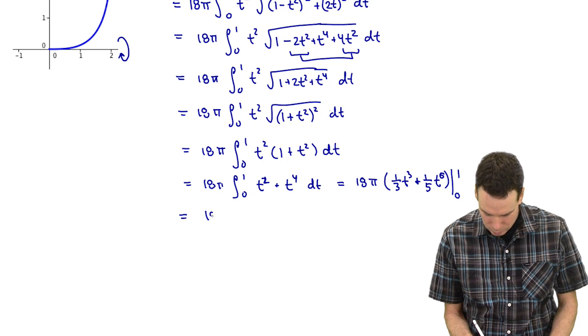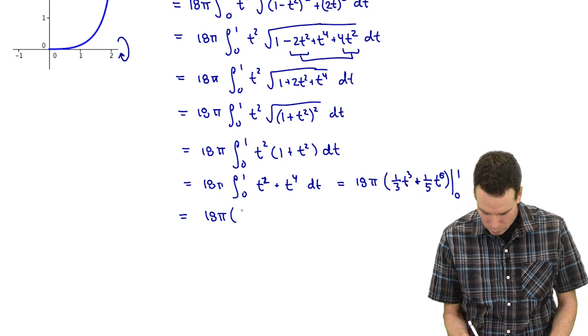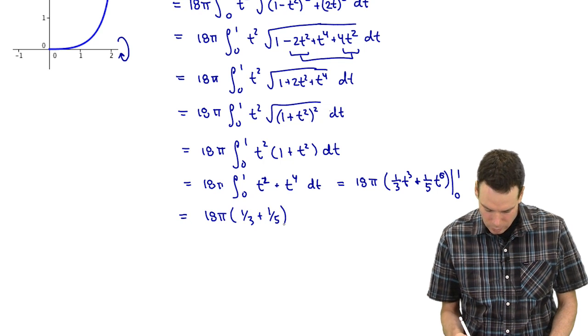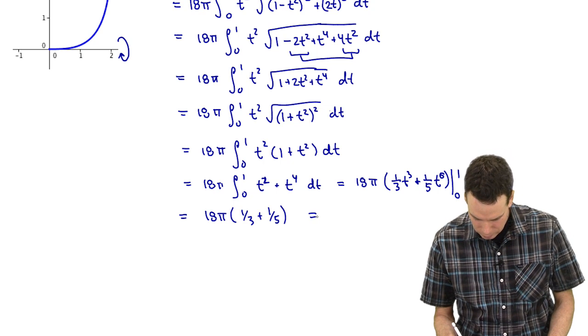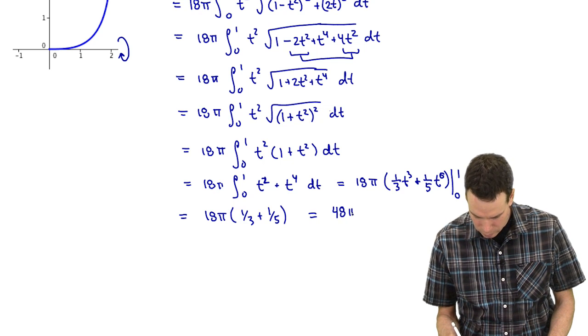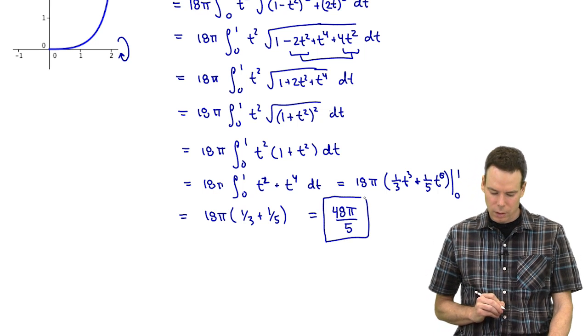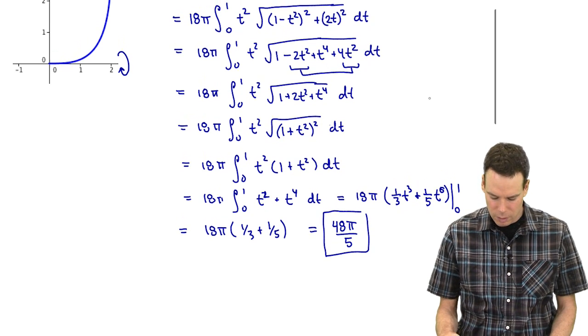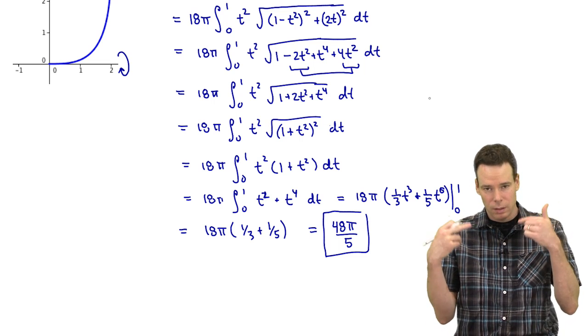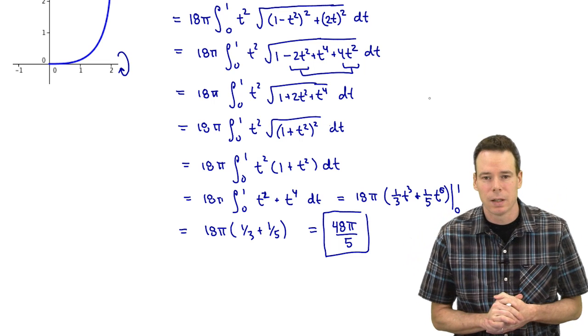And so this becomes 18π(1/3 + 1/5) and so simplifying that down we get 48π/5 as our answer. And so there's the area of the surface that we get by rotating that curve about the x-axis.